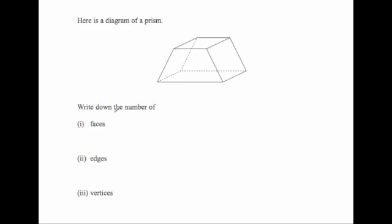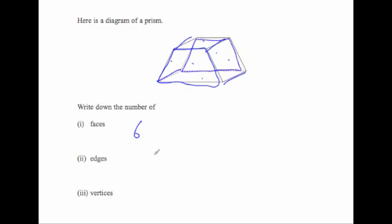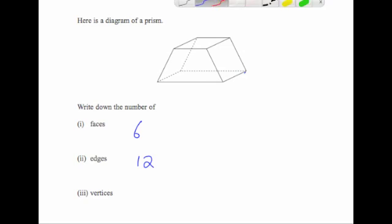Let's look at our last question. Here's a diagram of a prism — write down the number of faces. We've got a trapezium at the front and a trapezium at the back, a rectangle on the right hand side and a rectangle on the left hand side, one on the top and one on the bottom — so altogether six faces. The number of edges: four at the front, four leading back, and four at the back — so 12 edges. And the number of vertices: four on the top and four on the bottom — so altogether eight vertices.